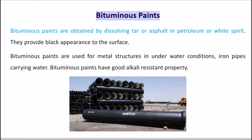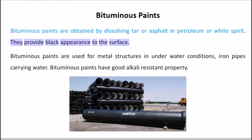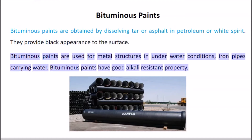Bituminous paints are obtained by dissolving tar or asphalt in petroleum or white spirit. They provide a black appearance to the surface. Bituminous paints are used for metal structures in underwater conditions and for iron pipes carrying water. Bituminous paints have good alkali-resistant properties.